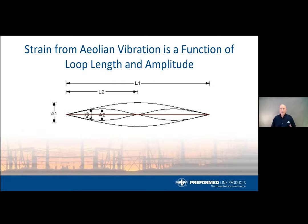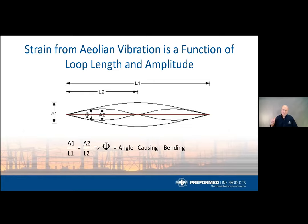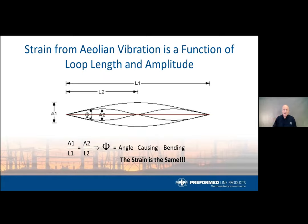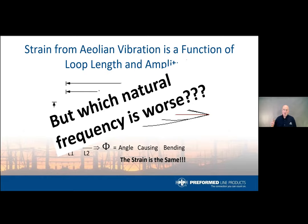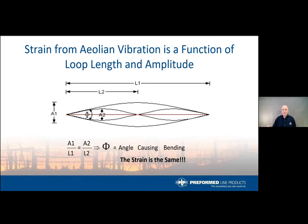Reviewing how this affects the conductor at the support location: A1/L1 equals A2/L2, which is the angle of sweep through the node point at the support that causes bending strain. The strain for both frequencies is the same because the sweep angle is the same. However, the movement at 30 Hz is much worse because you'll have twice as many bending cycles over the same period of time.